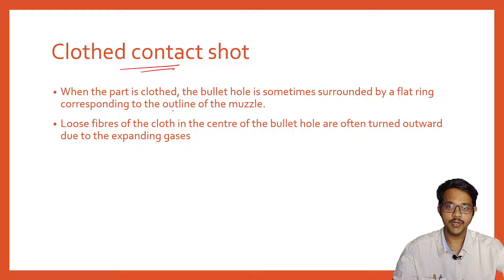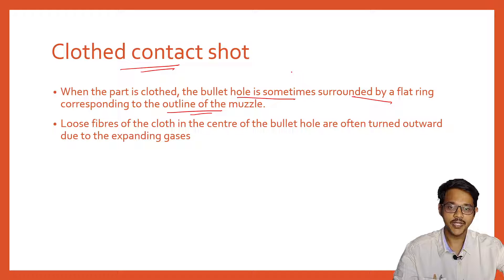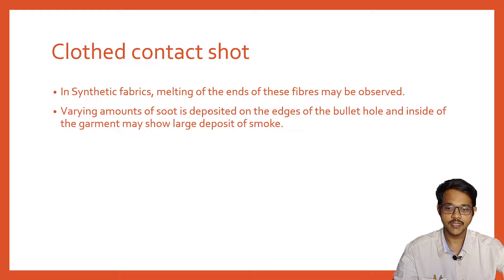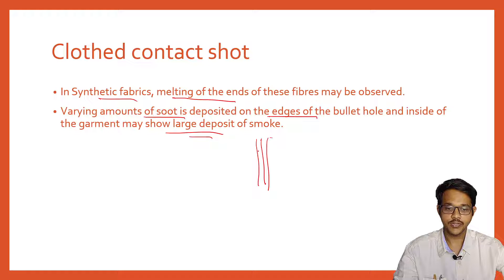In a contact shot through clothing, the bullet hole is sometimes surrounded by a flat ring corresponding to the outline of the muzzle. Loose fibers of cloth at the center of the bullet hole are often turned outward due to expanding gases. Synthetic fibers will show melting at their ends. Varying amounts of soot are deposited on the edges of the bullet hole, and undergarments or folds of cloth may show varying soot deposition between their layers.